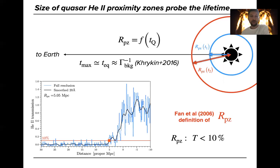For that we use the definition from Worseck et al. 2006, which is when the properly smoothed transmission profile drops below 10% for the first time.